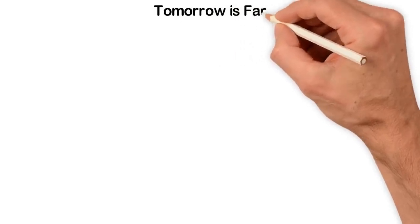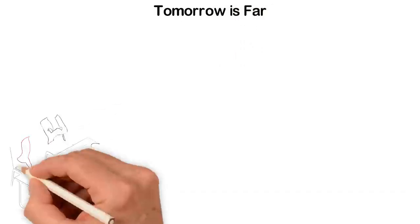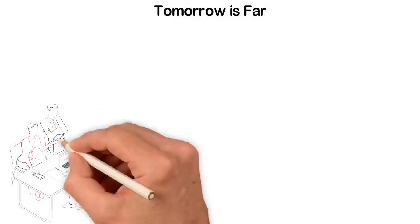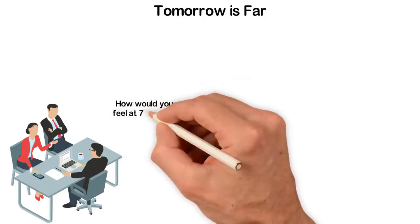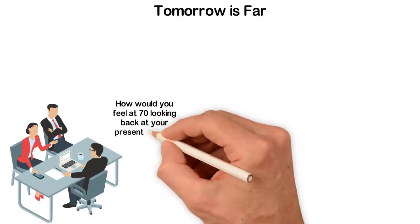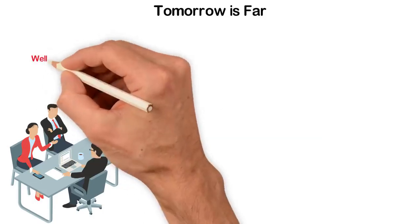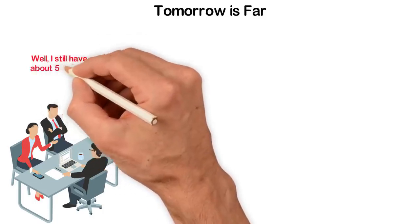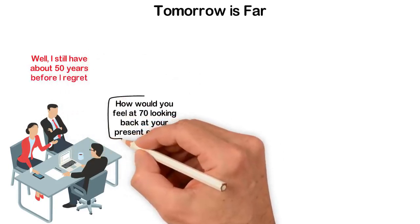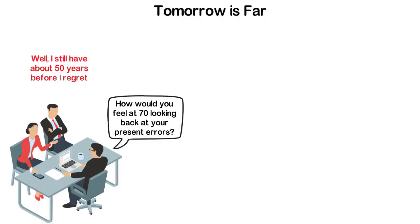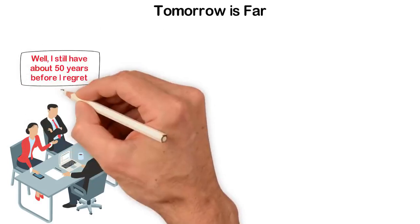Tomorrow is far. I once watched a young man on TV who was doing what was obviously wrong. When he was asked how he would feel at 70 looking back at his present errors, he said, well, I still have about 50 years before I regret. This sounds so stupid, but we all do similar things in our life because we think that tomorrow is far.